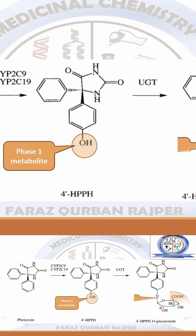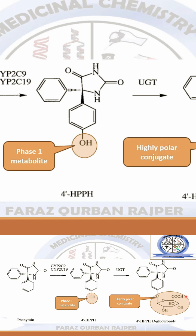The drug is converted into its O-glucuronide form. Here you may observe the glucuronic acid carbohydrate moiety has been introduced. This is a highly polar conjugate and it can be easily excreted out.